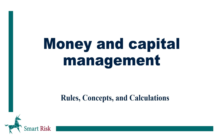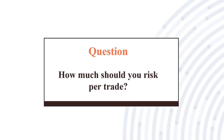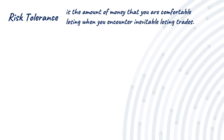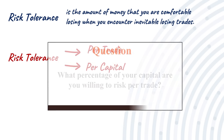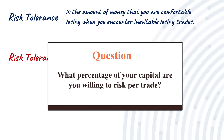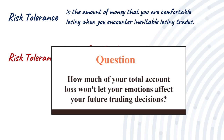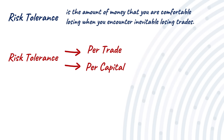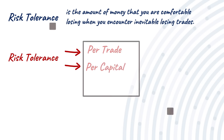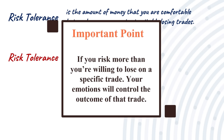Let's continue with some of the basic rules, concepts, and calculations of money and capital management. How much should you risk per trade? This answer pretty much depends on your risk tolerance — the amount of money that you are comfortable losing when you encounter inevitable losing trades. Ask yourself: what percentage of your capital are you willing to risk per trade and be comfortable losing if things don't go your way? And if you're having bad days and lose five trades in a row, how much of your total account loss won't let your emotions affect your future trading decisions? Depending on your answers, you could build a solid money management plan, and following it keeps emotions away in trading.